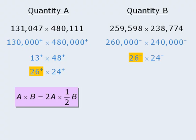When we compare these two numbers, we can see that this one is bigger. And when we compare these two numbers, we see that this one is bigger. Since both numbers in the quantity A product are greater than both numbers in the quantity B product, quantity A must be greater, in which case the answer is A.